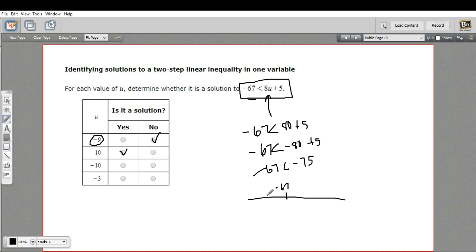And negative 75 would be even more negative right here. So negative 75 is actually less than negative 67. So negative 67 is not less than negative 75.